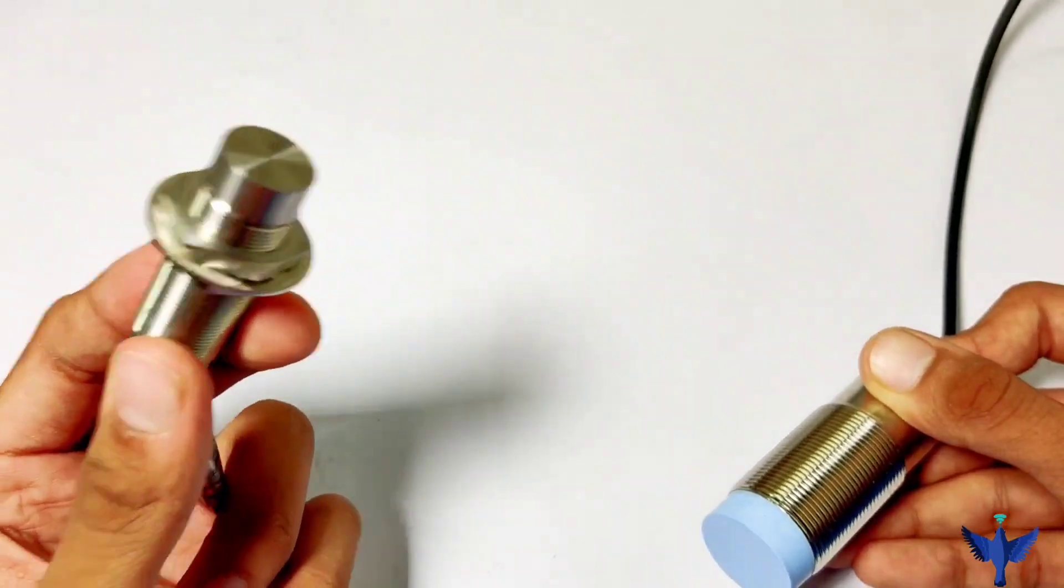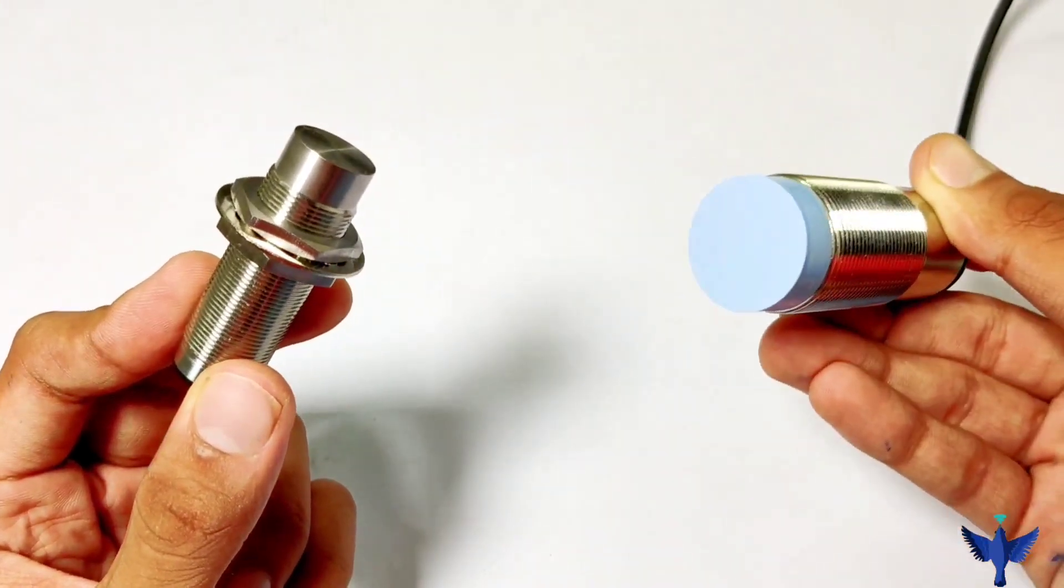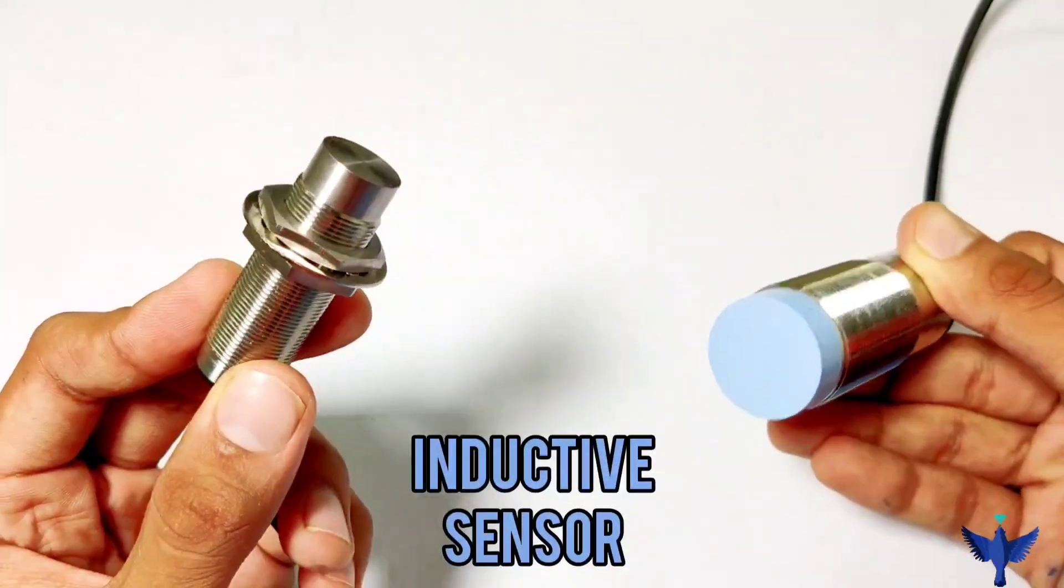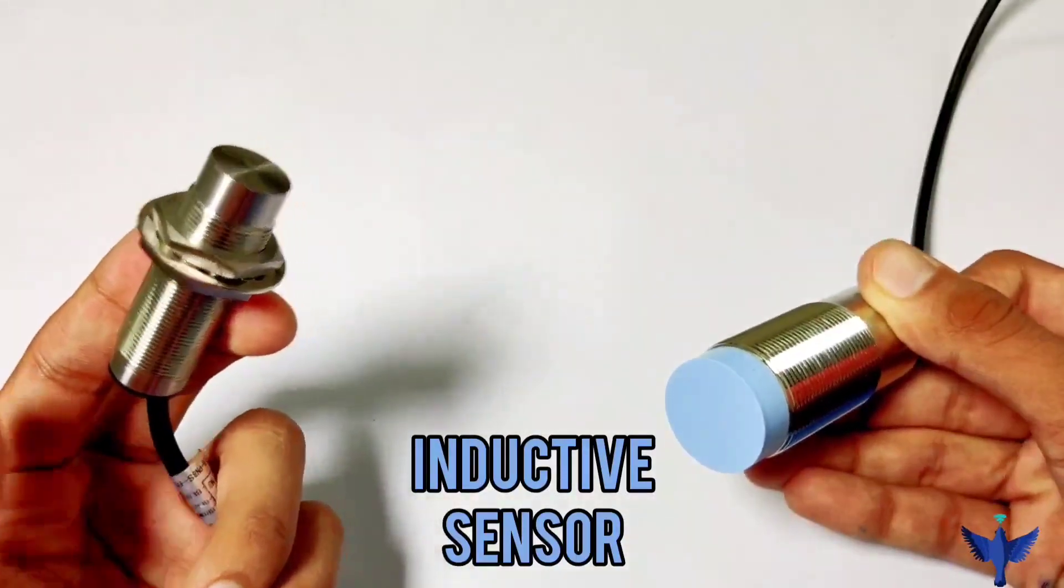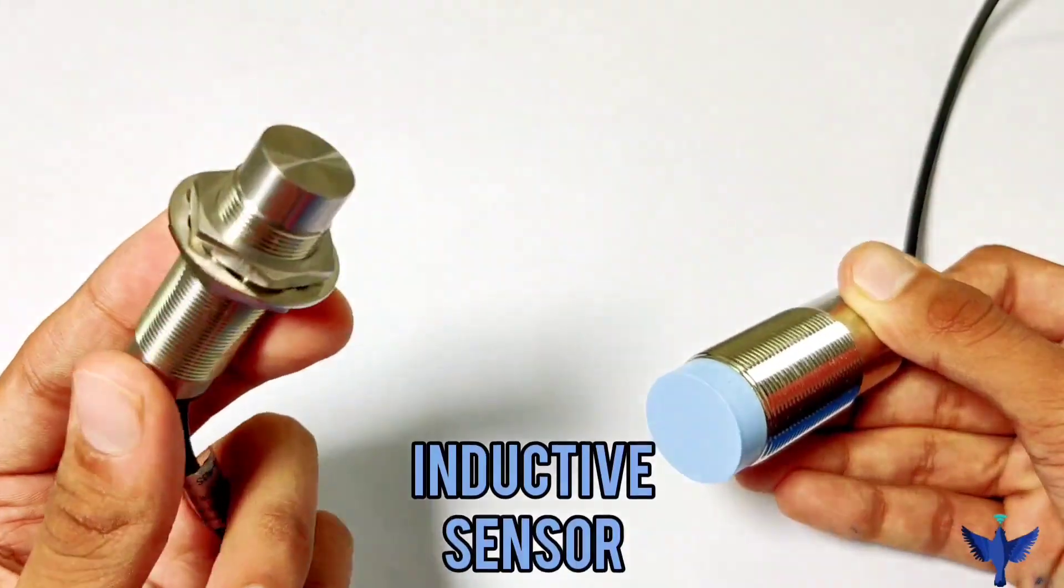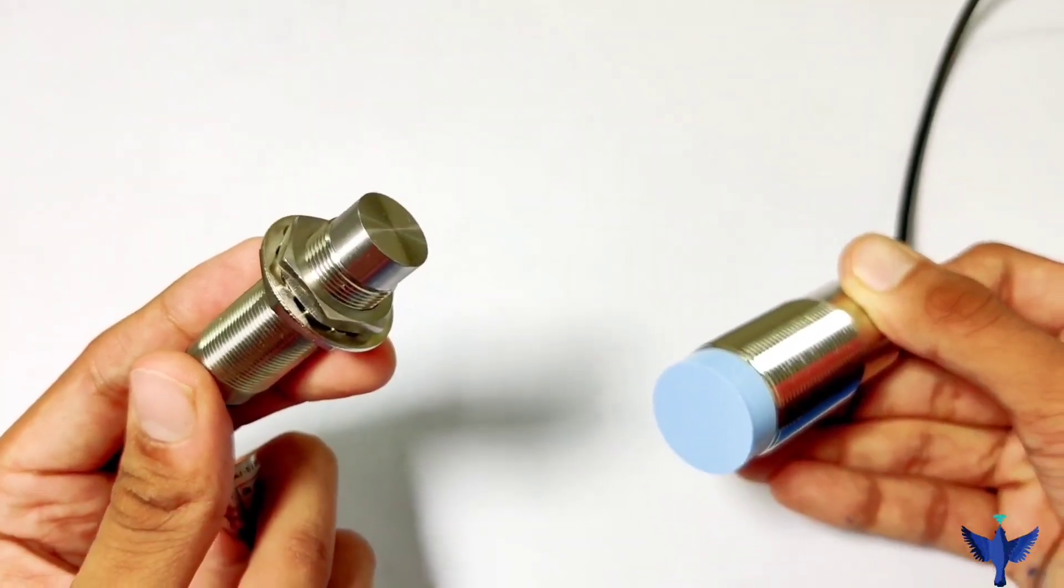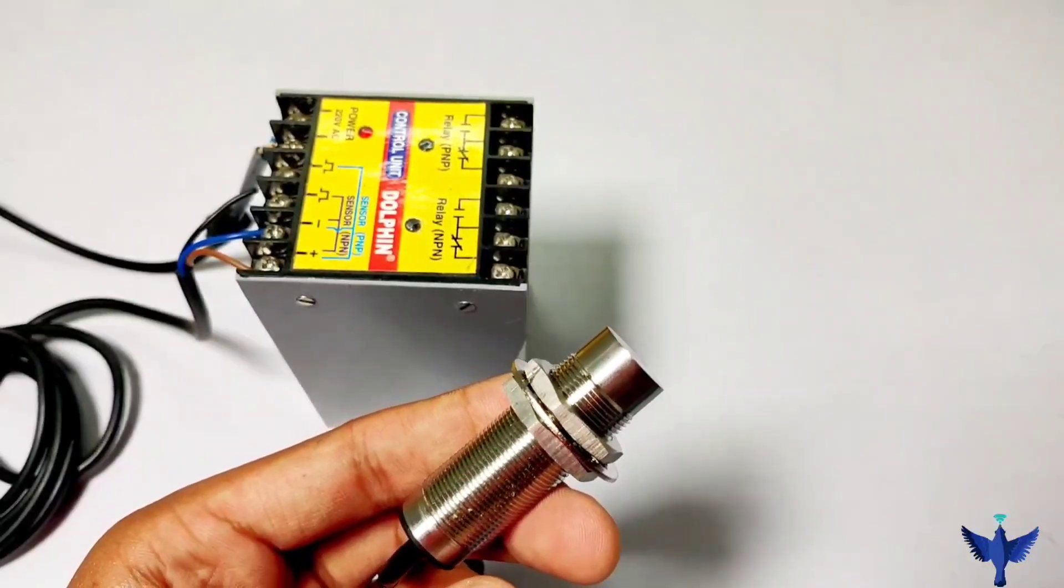We've understood the importance of this sensor. Both are inductive sensors that sense metallic targets. But we now understand the meaning and importance of this metal face sensor. Now let's see the working of this sensor.